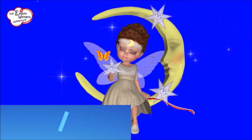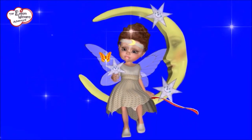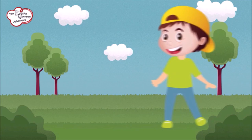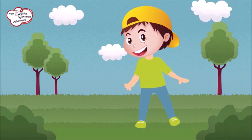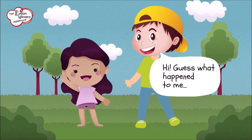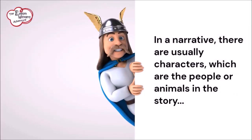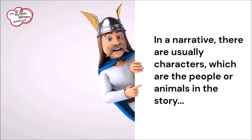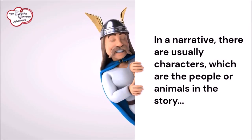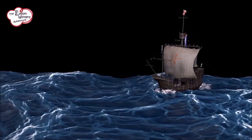A narrative is a story that tells us about things that happen. It's like when you tell a story to your friends about something fun or exciting that happened to you. In a narrative, there are usually characters, which are the people or animals in the story, and they do things like have adventures or solve problems.